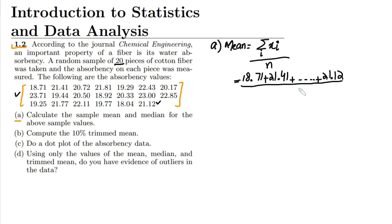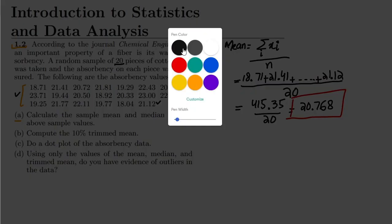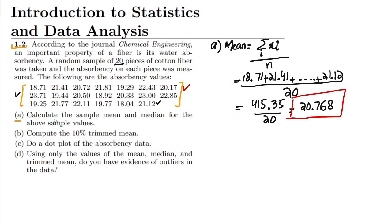The summation here is 415.35 divided by 20, and it will give me 20.768. So this is the sample mean for the data set.